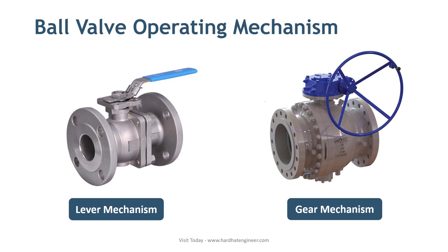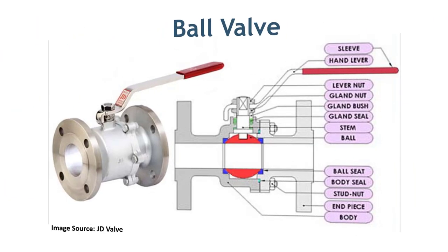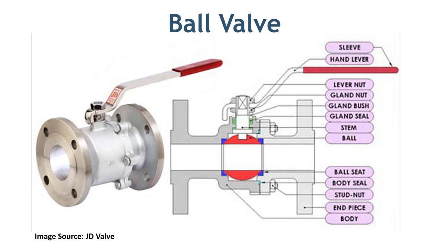The ball valve is like a plug valve in operation. Small size ball valves can be operated by lever. However, for large size valves, you may need a gear mechanism to operate the valve easily. Some degree of throttling is possible with a ball valve, but it is not recommended as it may damage the seat and ball. When fully open, the pressure drop across the valve is negligible.